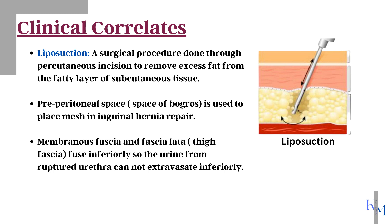Another important clinical point is that sometimes urine from a ruptured urethra can extravasate between the membranous layer and the deep fascia covering the muscles. It can't extravasate inferiorly because the membranous layer of subcutaneous tissue fuses inferiorly with the deep fascia of the thigh, that is fascia lata.